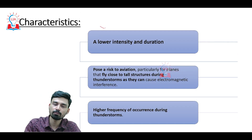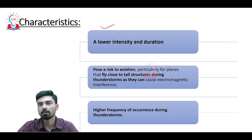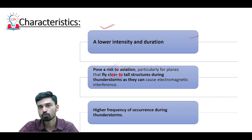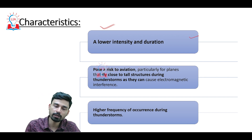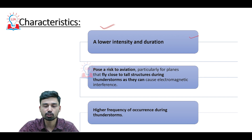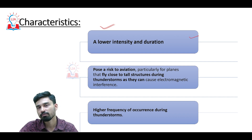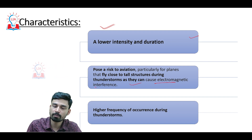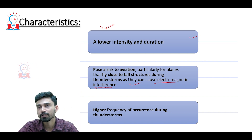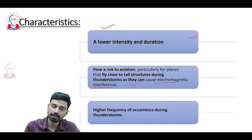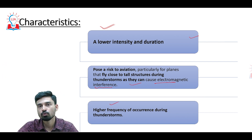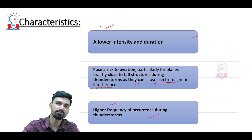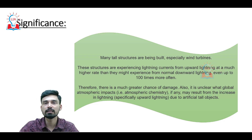Looking at the major characteristics of upward lightning: first, compared to normal downward lightning, upward lightning has lower intensity and shorter duration. Second, due to its upward movement, it poses a strong risk to aviation, particularly to aircraft flying close to taller structures during thunderstorms, as it can cause electromagnetic interference affecting communication systems. Third, upward lightning has a higher frequency of occurrence during thunderstorms. These are the three major characteristics that have been identified.